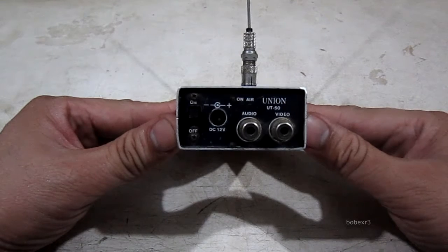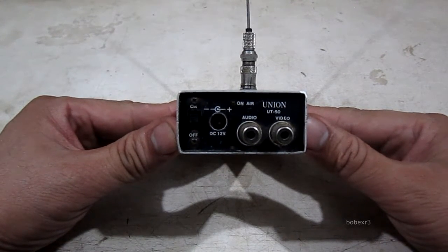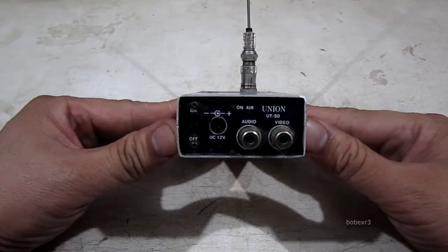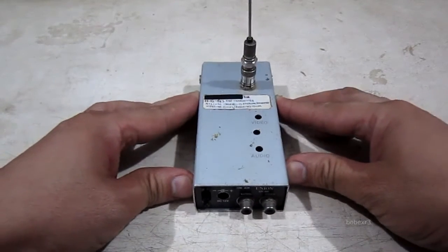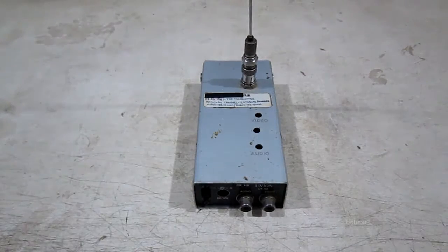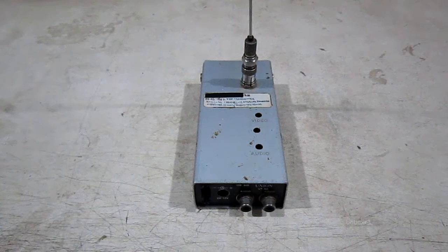This device is a TV transmitter, the brand is Union model UT-50. This was advertised as a video divider. The main purpose of this was if you only have one VCR, it allows all the TVs in your house to pick up the signal without wires.